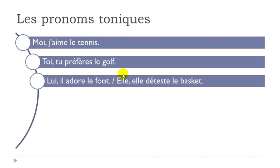Now we have the masculine and feminine forms. Masculine: LUI, IL ADORE LE FOOT. Here LUI is the pronom tonique, then IL is the pronom personnel, followed by ADORE — to adore. We're talking about football. Feminine: ELLE, ELLE DÉTESTE LE BASKET. DÉTESTER means to hate. We're talking about basketball. ELLE, ELLE DÉTESTE LE BASKET.